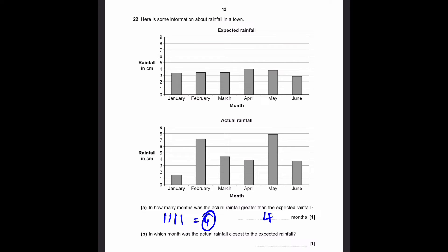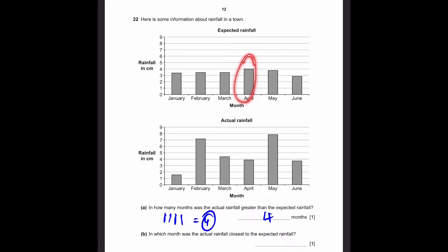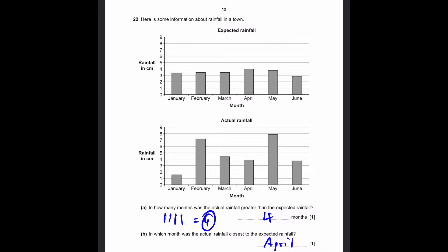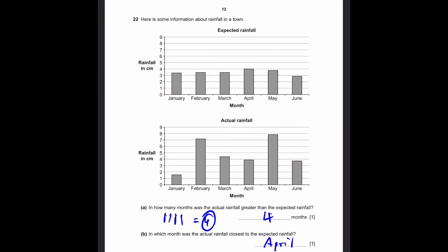Part B: In which month was the actual rainfall closest to the expected rainfall? April has the closest gap — the actual looks like about 3.8 or 3.9 centimeters, and the expected rainfall is 4 centimeters, which is extremely close. If you look at all the other months and take the difference, it'll be nowhere as close as April. So the answer is April.